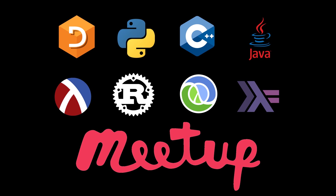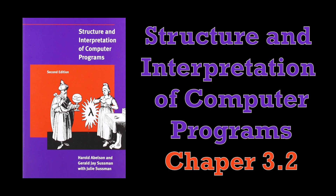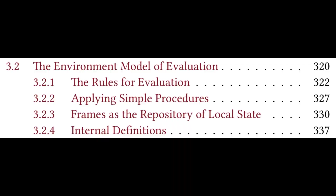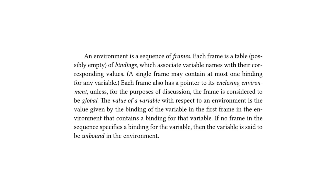Welcome to the 11th pre-recording of the Programming Languages Virtual Meetup. My name is Conor Hookstra and in this video we're going to be covering Chapter 3.2 of the Structure and Interpretation of Computer Programs. The table of contents for Chapter 3.2 is as follows: the chapter section is entitled the Environment Model of Evaluation, and there are four subsections. This chapter section is all about the environment model which was referenced quite a bit in the previous Chapter Section 3.1.